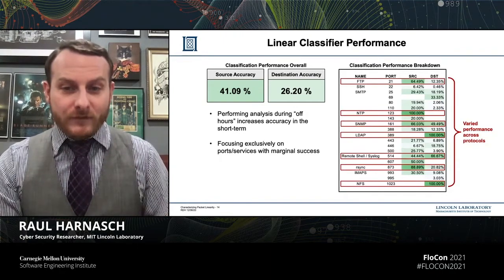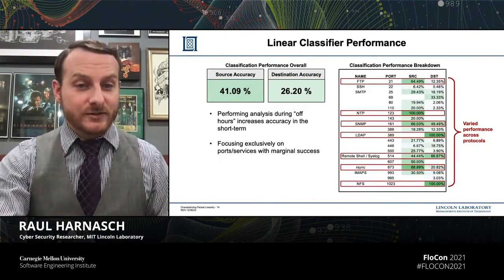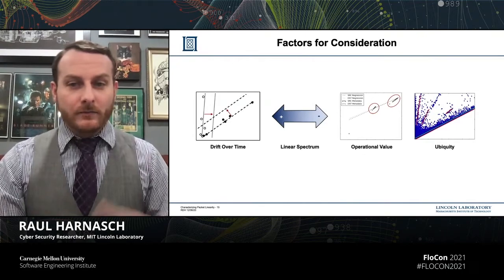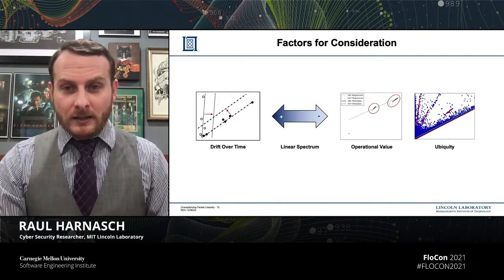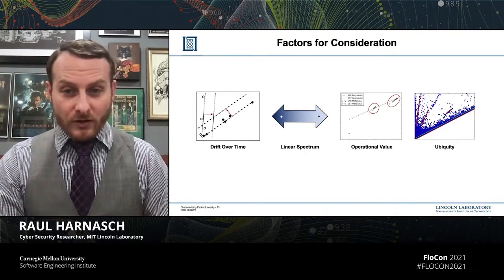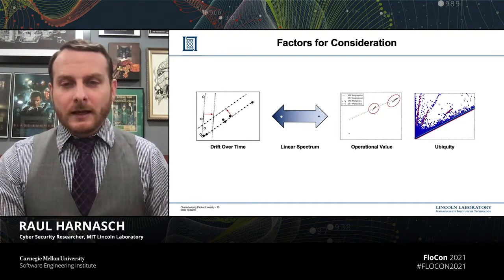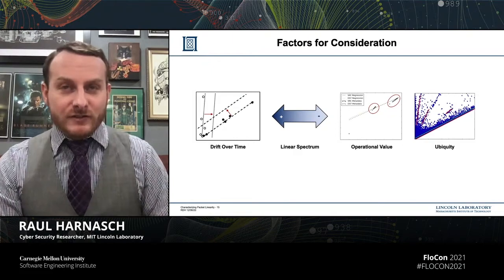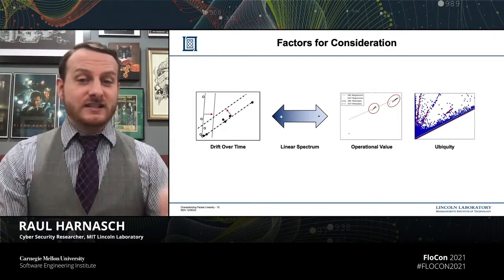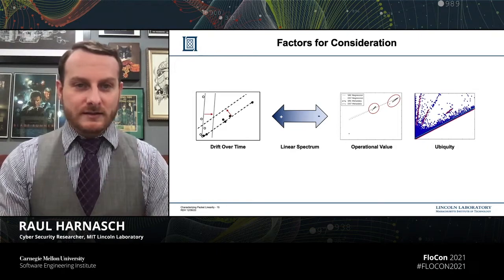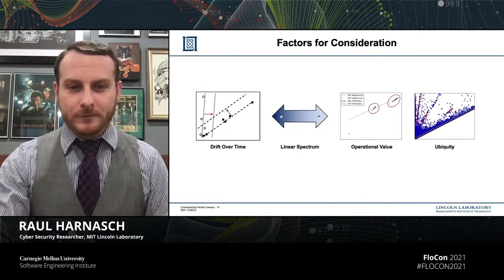To prove this is a worthwhile endeavor, I'd like to go over four different factors for your consideration. First, do these patterns shift or are they stable? Just how linear are these protocols on a spectrum? What is the potential operational value of this sort of method? And is this something unique just to MIT Lincoln Laboratory, or would it be seen across the internet at large?